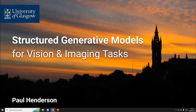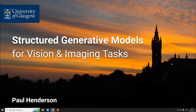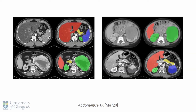We've seen today a bunch of examples, and we know that deep learning in the last 10 years has become really good at doing lots of tasks that previously only humans could do. This is particularly true in imaging. For example, if I want to segment the organs in a CT scan, I train a segmentation network and I can get really good results from that.